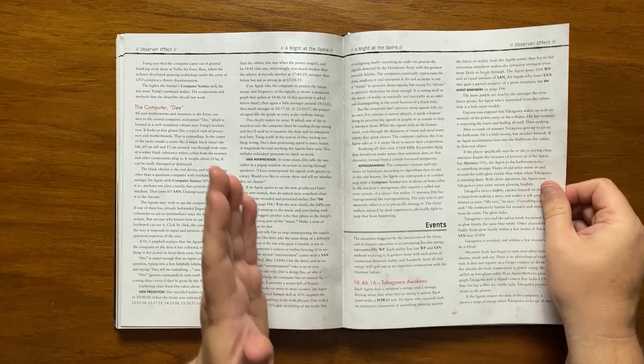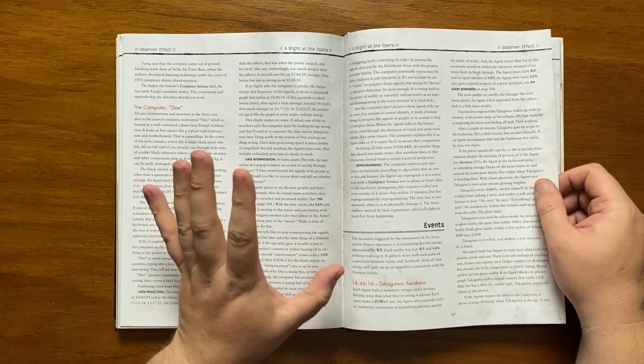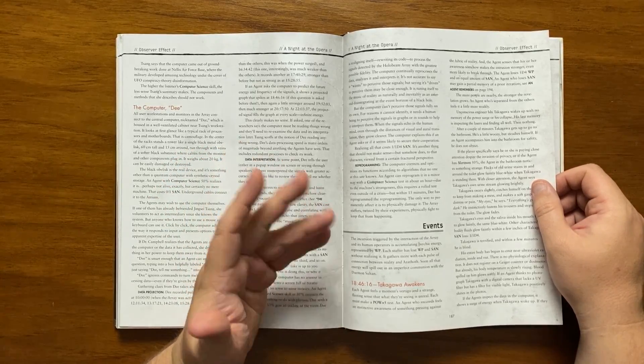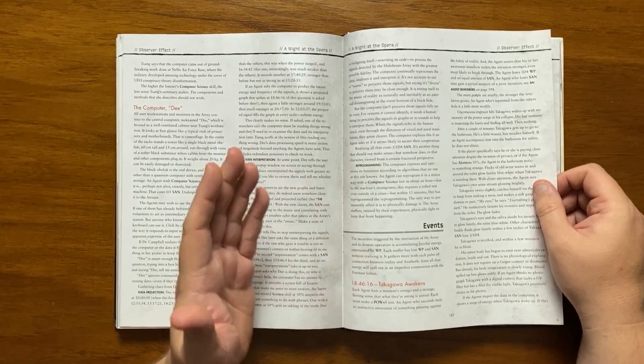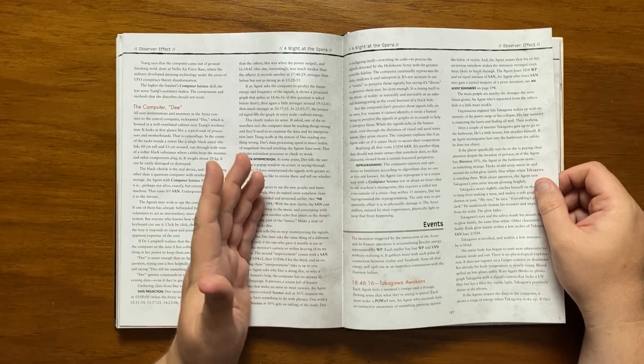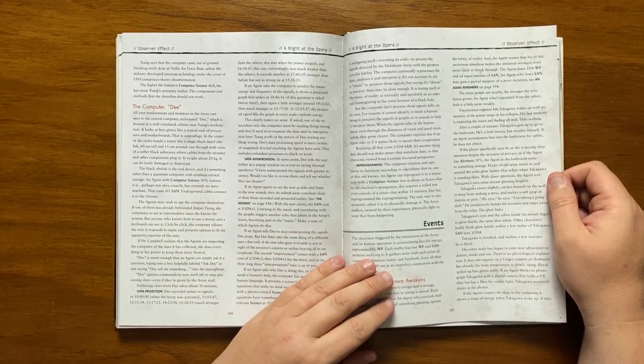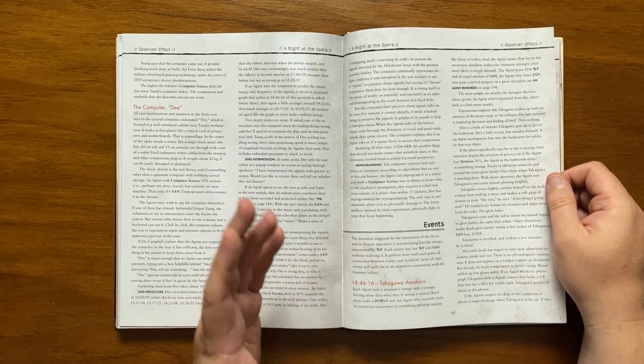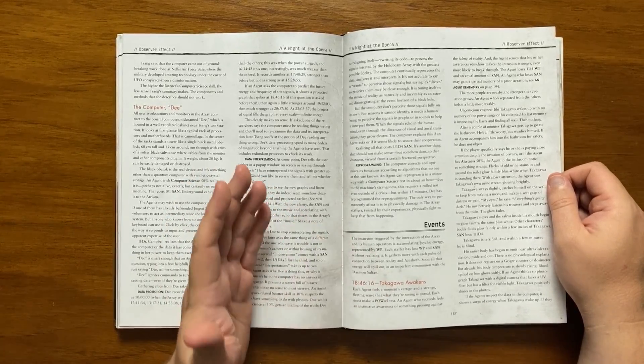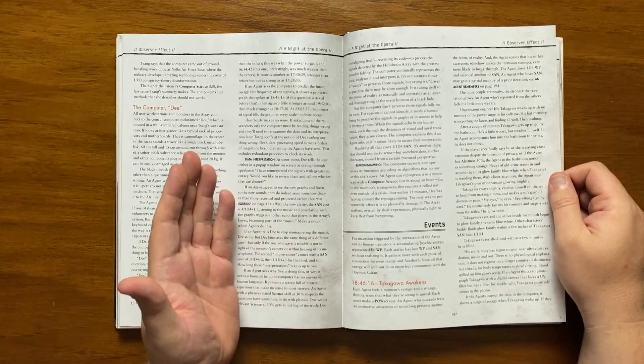At 1846 Takagawa wakes up. Each agent has a moment of vertigo and a strange sense of the unreal and almost make a power times 5 roll. Those that succeed can feel an awareness of something pressing against reality causing SAN and willpower loss. They will also gain a partial memory from a prior iteration. These are detailed later. The more people that are nearby the stronger the revelation. Takagawa wakes up with no memory of the power surge. He says he needs the toilet. If an agent asks to accompany him he doesn't object. Those that are being particularly and perhaps creepily observant of Takagawa notice that his urine stream glows bright blue white. He then catches himself on the wall and gasps saying my eyes everything's going dark. The insides of his eyes and mouth start glowing the same blue white and within a few minutes he is blind and terrified.